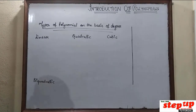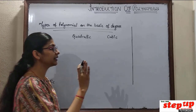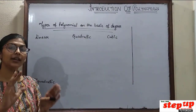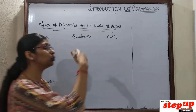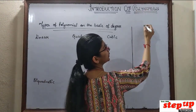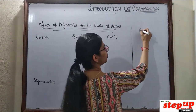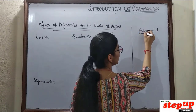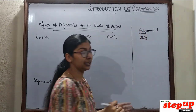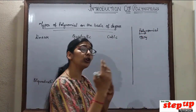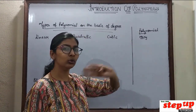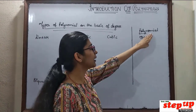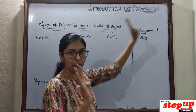After quadrinomial, which has 5 unlike terms, 6 unlike terms, 7 and beyond — all of those can be placed in the polynomial category. Because poly means many. So from 5 and beyond — actually from 4 and beyond — all those terms fall under the polynomial category.